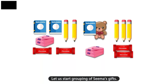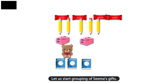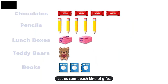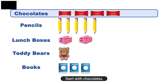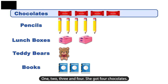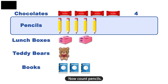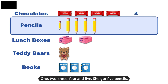Let us start grouping Seema's gifts and count each kind. Start with chocolates: 1, 2, 3 and 4. She got 4 chocolates. Now count pencils: 1, 2, 3, 4 and 5. She got 5 pencils.